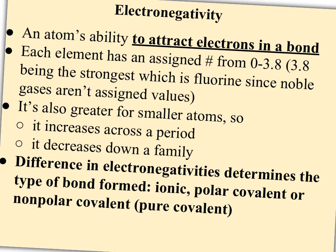Electronegativity is an atom's ability to attract the electrons once it's in a bond. Linus Pauling came up with an electronegativity value and assigned every element other than the noble gases a value from 0 to 3.8, with 3.8 being the strongest, which is fluorine. It's greater for the smaller atoms, so fluorine, and then as you move down and left from there, oxygen and chlorine also have very high electronegativities. Nitrogen, sulfur, and bromine are still pretty strong. Electronegativity will increase across a period as that nucleus gets stronger and pulls things in tighter, but it will decrease down a family as you add an energy level and move those electrons further out.